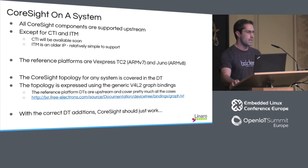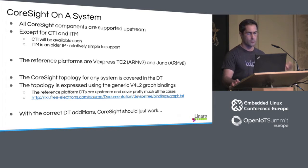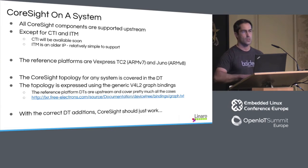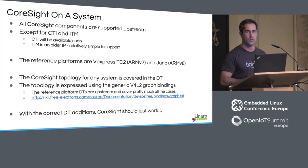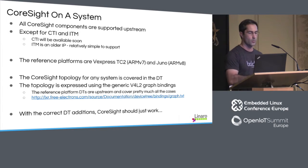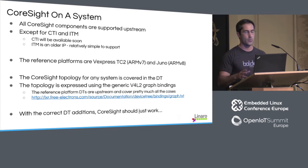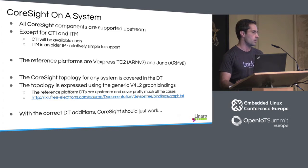I currently maintain two platforms upstream for Coresight: the vExpress TC2 for ARMv7 and Juno for ARMv8. Between these two we are covering most of the cases found for Coresight. Most of the topologies you will have on your board are more or less covered, or these two platforms provide enough examples to give a good reference for how to do things on your own platform.